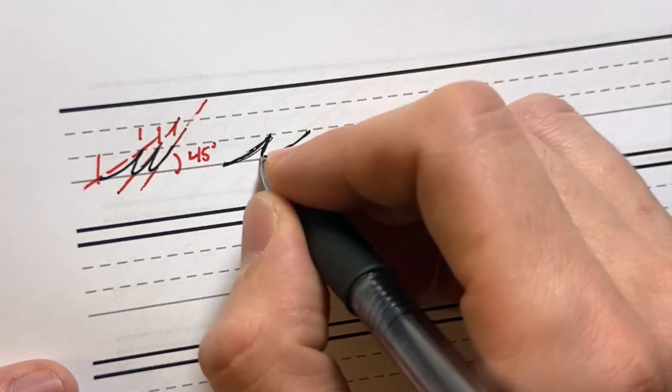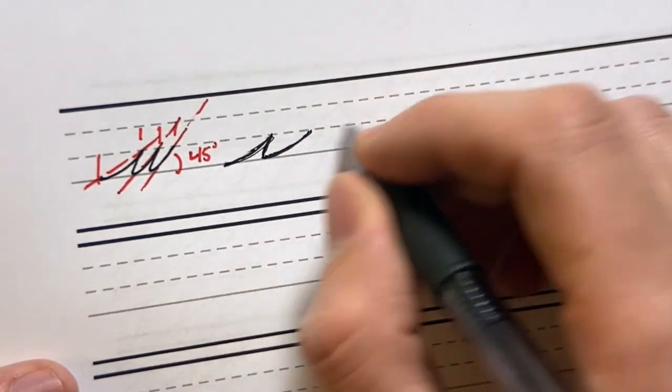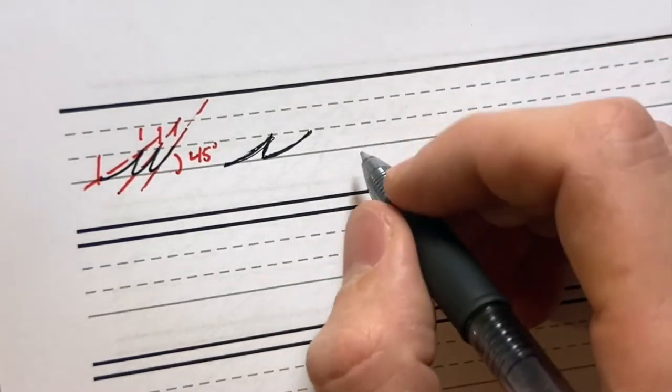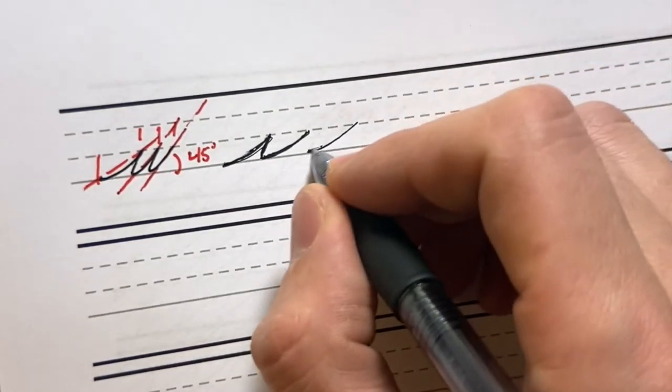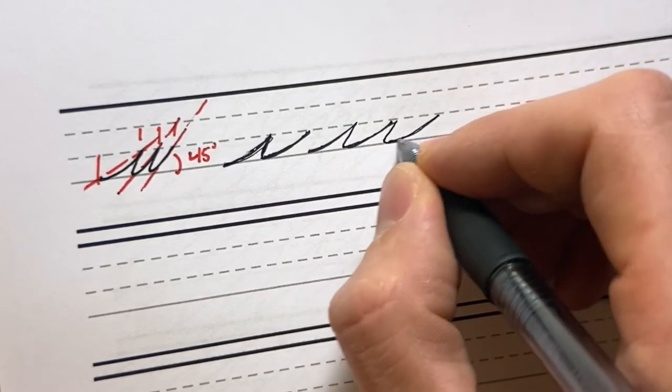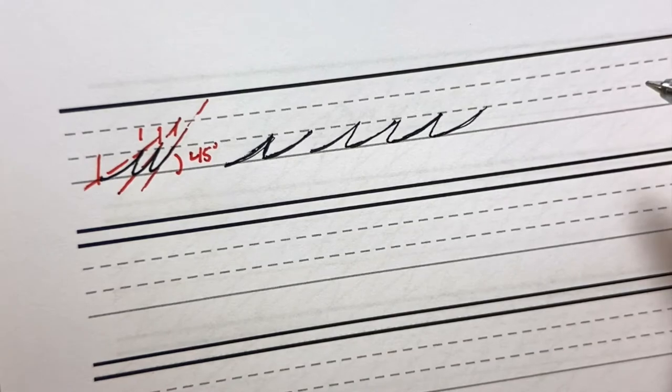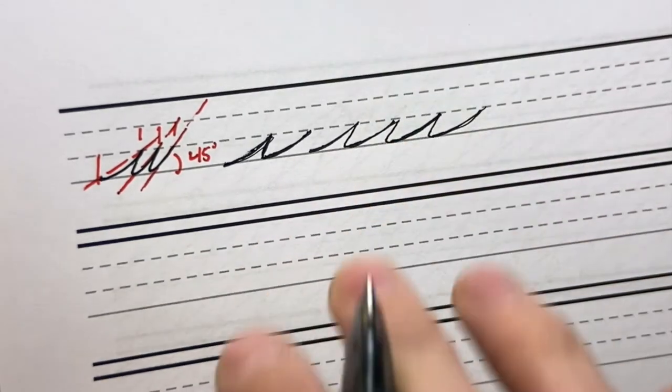And then as you exit, you exit with the arm again. And when you're using the arm, you have a lot of freedom of motion. You can make these wide connective strokes with the arm. So that's how the script was taught, using that arm movement.